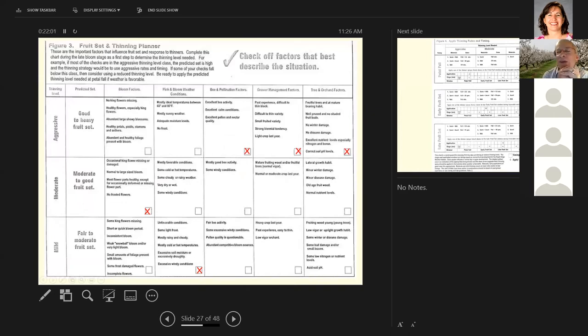There's so many things involved in thinning. It's very difficult to put these things together in your head. So this chart helps you plan your thinning. If you want to be aggressive in your thinning, moderate or mild, you look at the bloom factors, the pink and bloom weather conditions, the bee and pollination factors, grower management factors, and the tree and orchard factors. So for example, at bloom here, we don't have any king flowers missing, healthy flowers, especially king flowers, abundant, large showy blossoms, healthy petals, pistils, stamens, and anthers, abundant and healthy foliage present with bloom. Check that box.